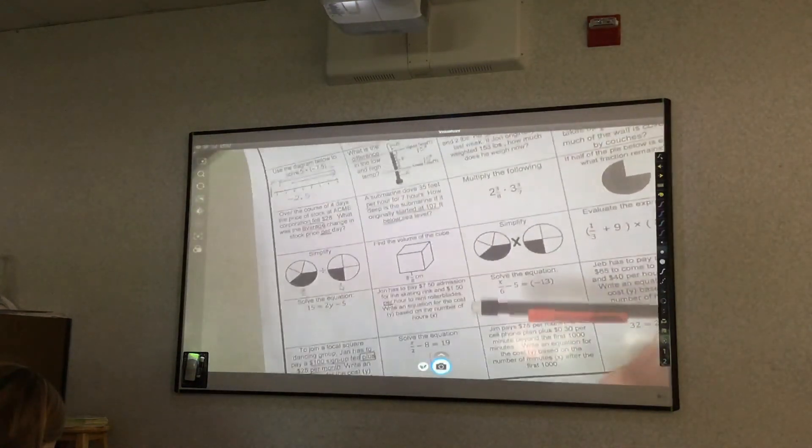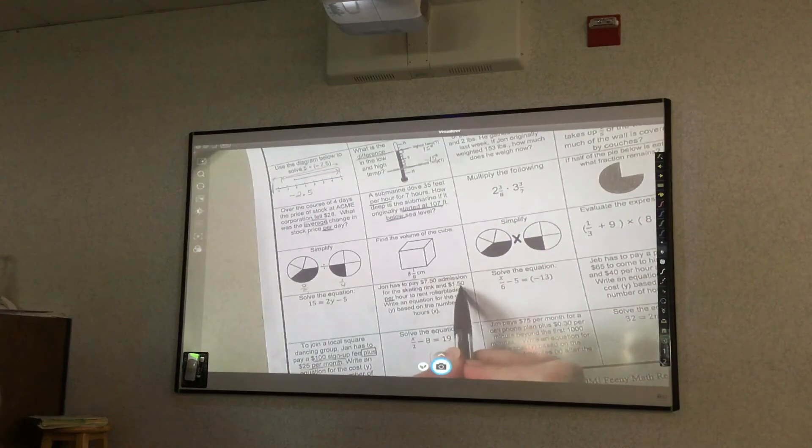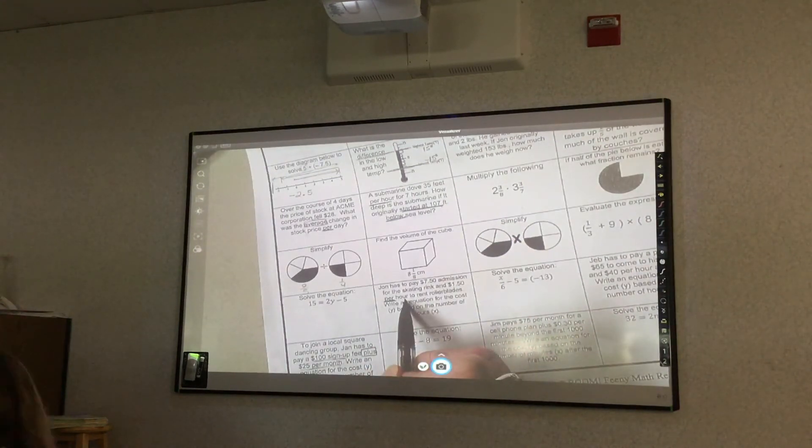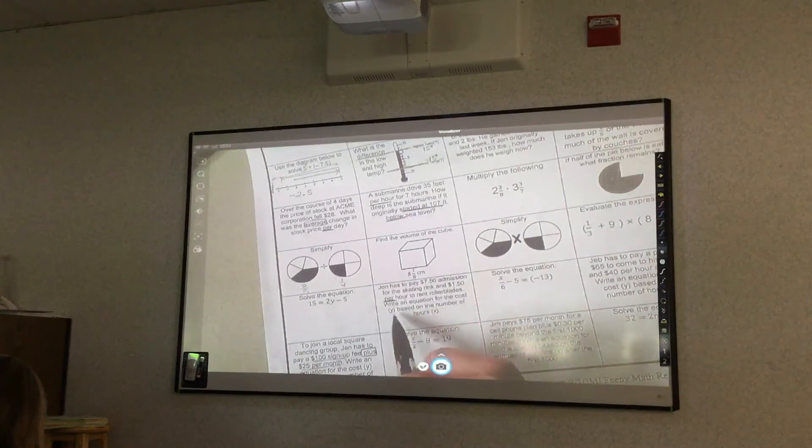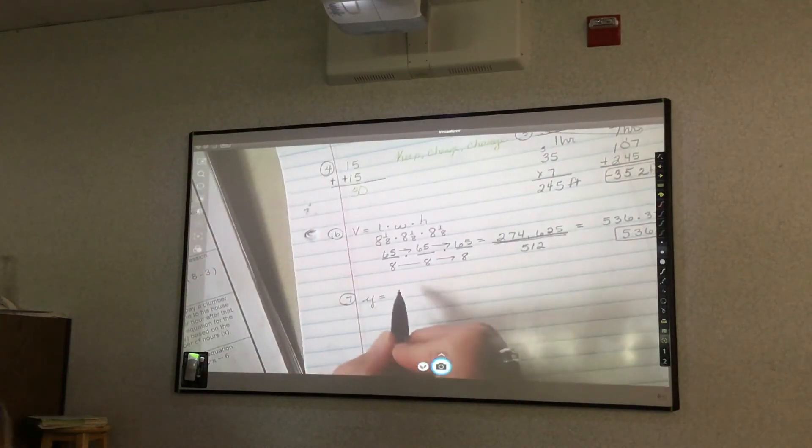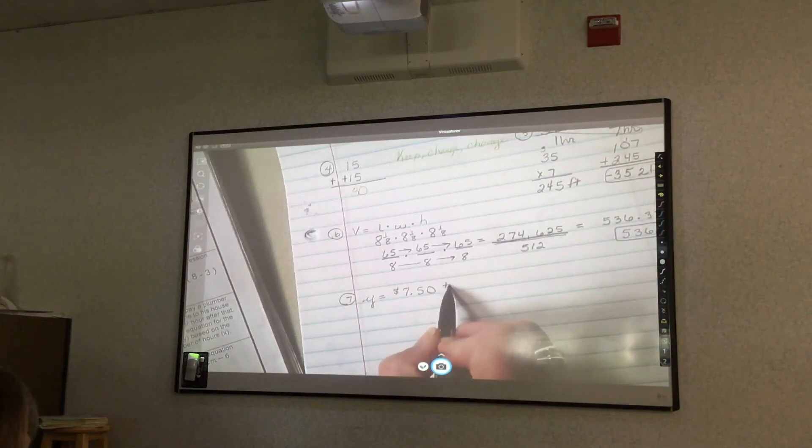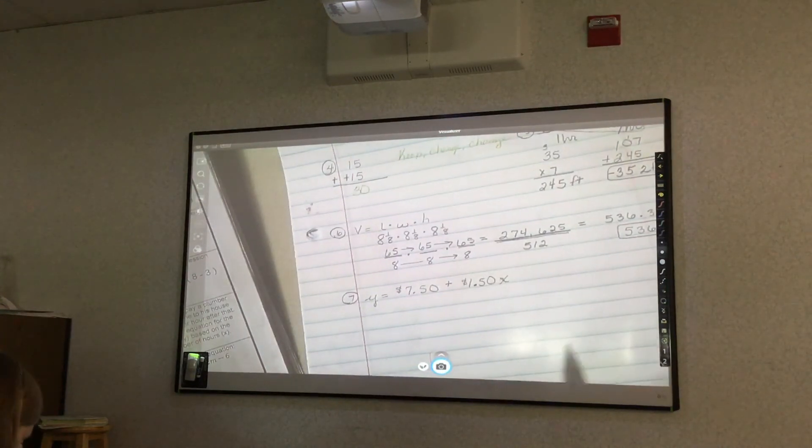Number 7. John has to pay $7.50 admission for the skating rink and $1.50 per hour. When I see per, it's either going to be multiply or divide. She rent rollerblades. Write an equation for the cost Y based on the number of hours X. So I don't know how many hours he's there. So Y equals, what's my base amount? Just to get in the door, $7.50. And it says plus, because we have to add $1.50 per hour. So it would be $1.50 times X, because my X is my number of hours. And that's all I had to do. All I had to do was write the equation. I didn't need to solve it or anything.